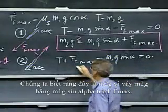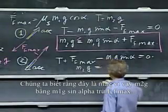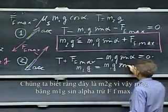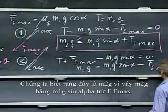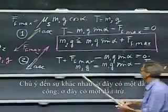We know that this is M2G, so M2G equals M1G sine alpha minus FFmax. Notice the difference. There's a plus sign here, there's a minus sign here.